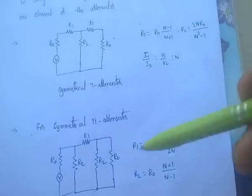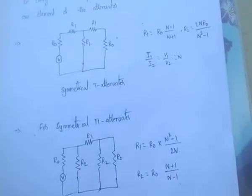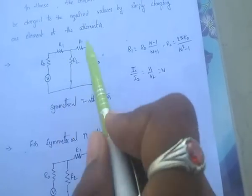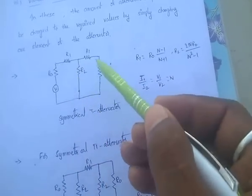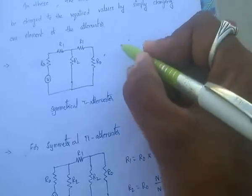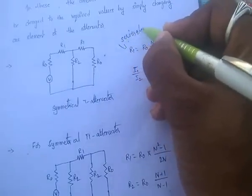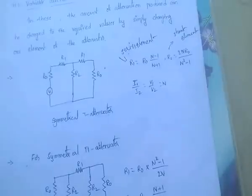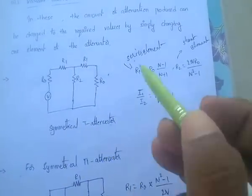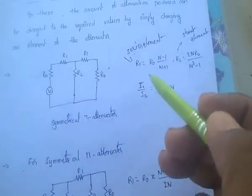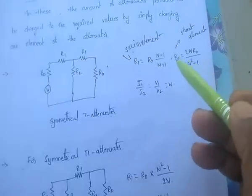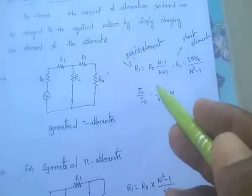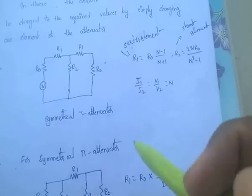Symmetrical T-type and symmetrical pi-type attenuators are very important. The T-type is in the form of T. Here R1 is a series element and R2 is a shunt element. The formula for the T-network: series element R1 = R0 × (n−1)/(n+1), and shunt element R2 = 2n×R0/(n²−1). N is the ratio of I1/I2 or V1/V2. These formulas are very important.